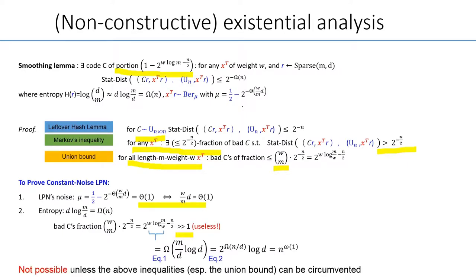It seems not possible to get a worst case to average case reduction for standard LPN, unless more tighter techniques are employed. We may particularly avoid the union bound, or any other inequality that incurs a huge security loss.